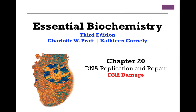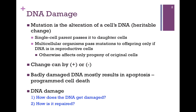In our next lesson from Chapter 20 on DNA replication and repair, we want to look at DNA damage. Let's first define what we mean by mutation: it is the alteration of a cell's DNA so that there's some change that's heritable. A single cell parent that has been mutated will pass that on to daughter cells.